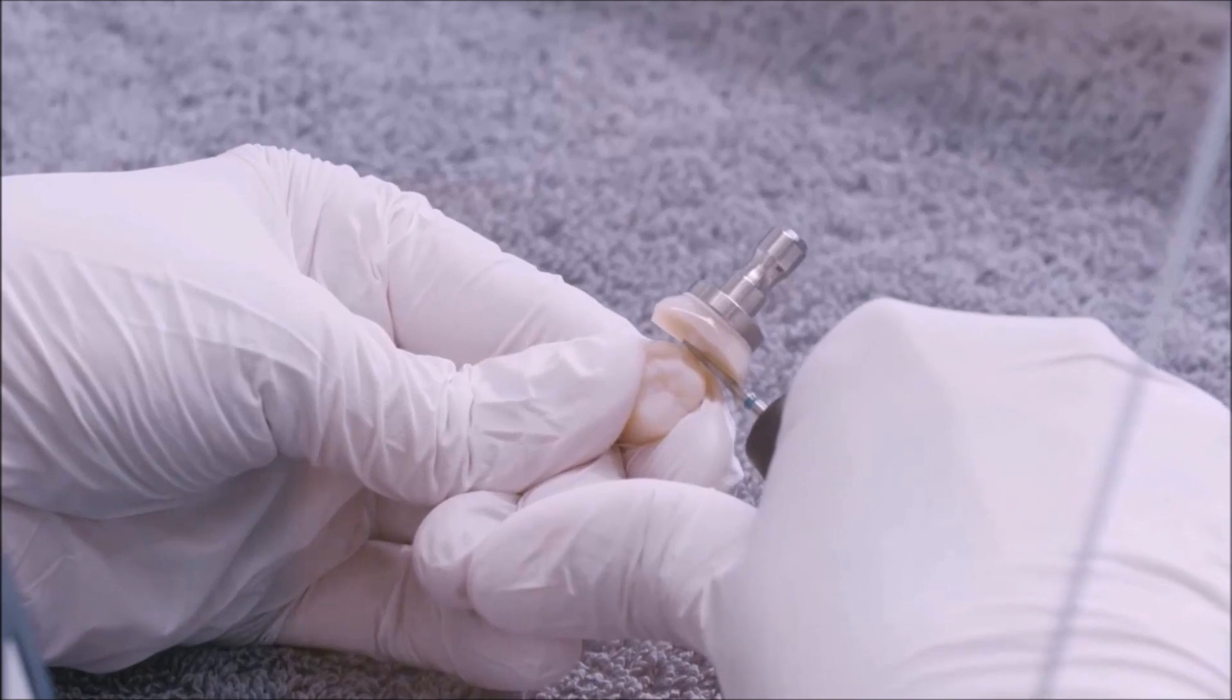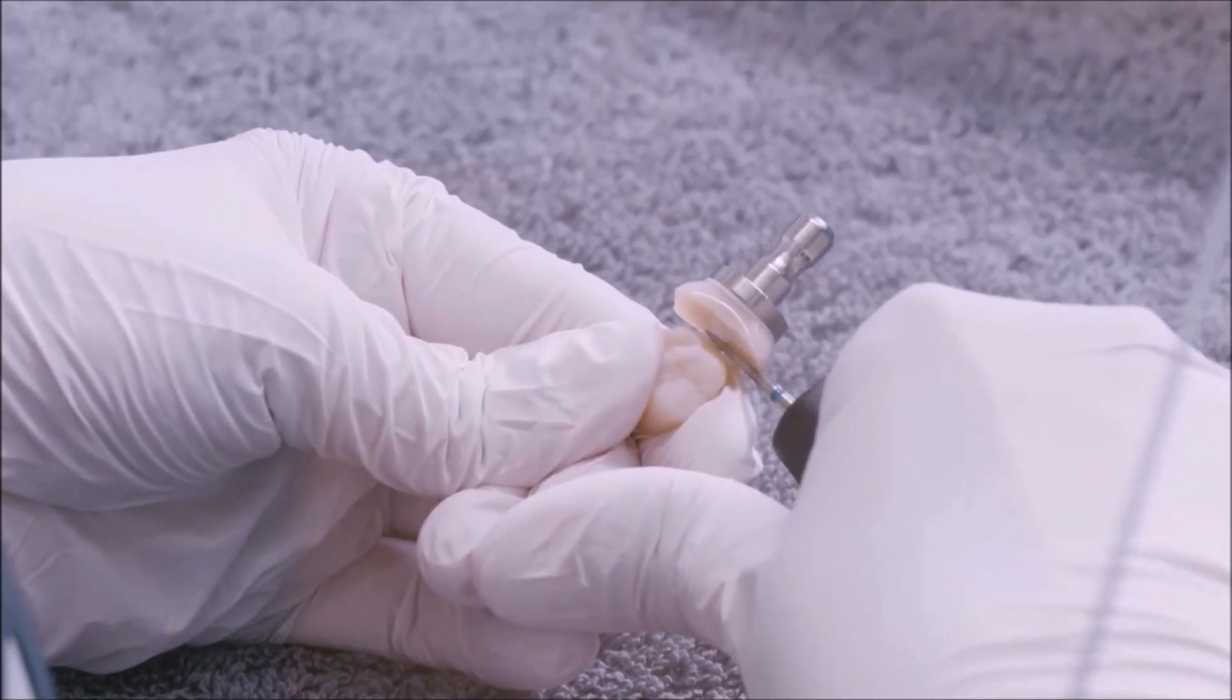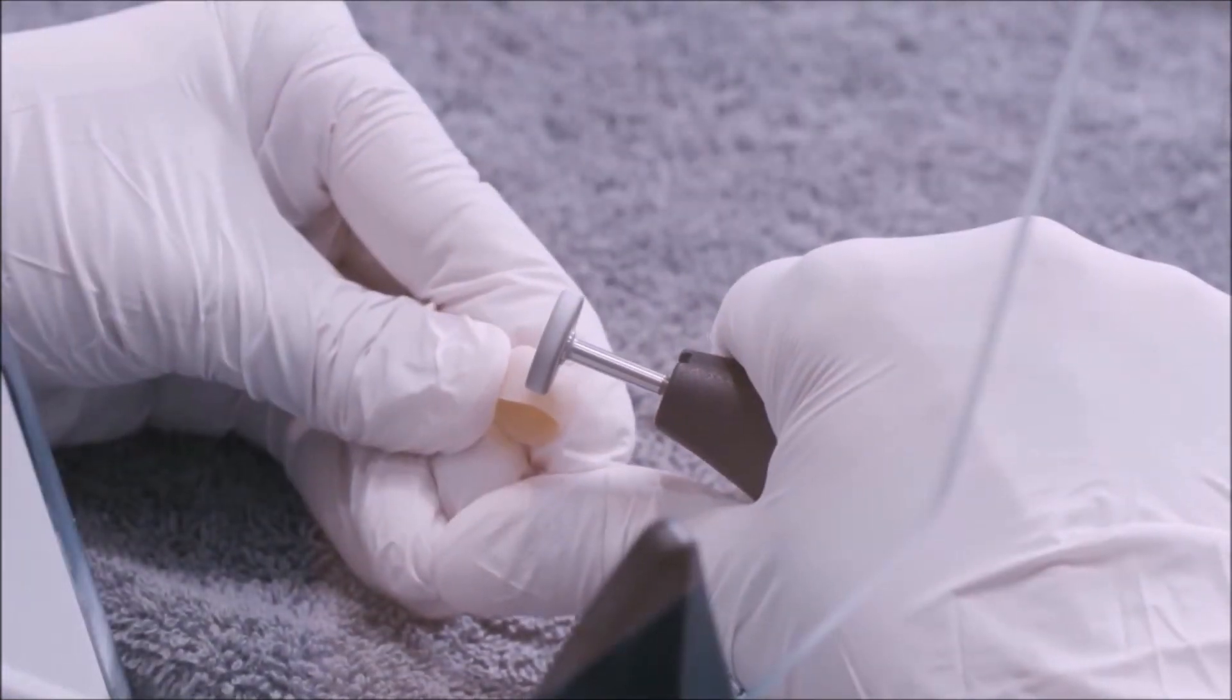We separate the restoration without applying any pressure. Then, we smooth the sprue location with a diamond rubber wheel.